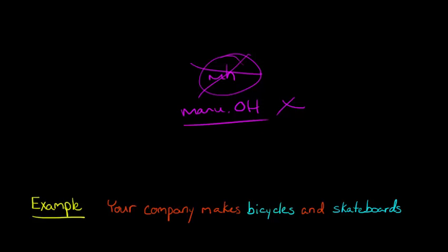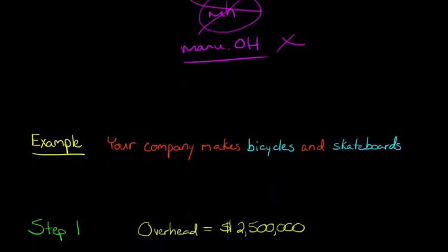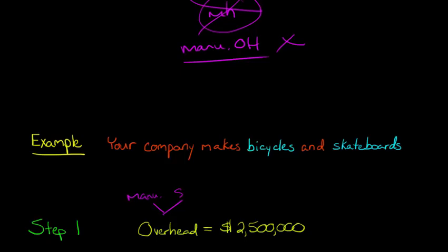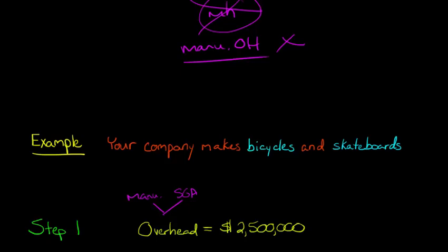So with activity-based costing, in step one of implementing the system, we're going to take all the overhead. Now this overhead can include manufacturing overhead and also SG&A-type overhead, like those customer support costs. We're going to dump it all in one bucket and say it's $2.5 million — that's what you've got for your firm.